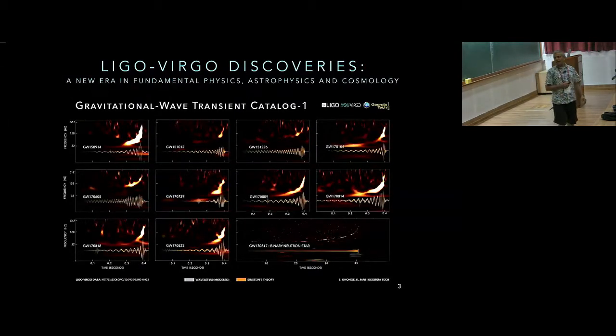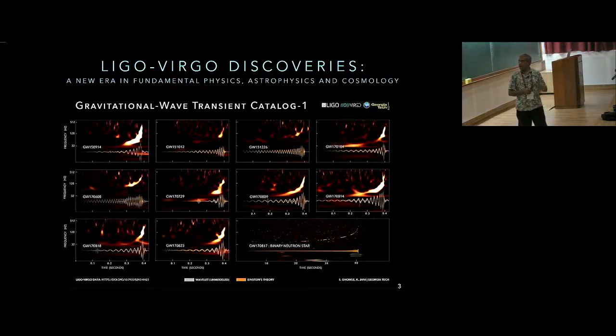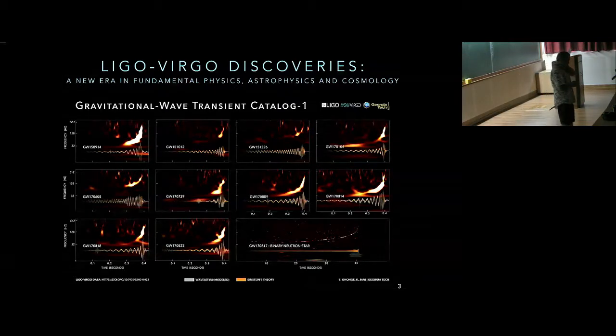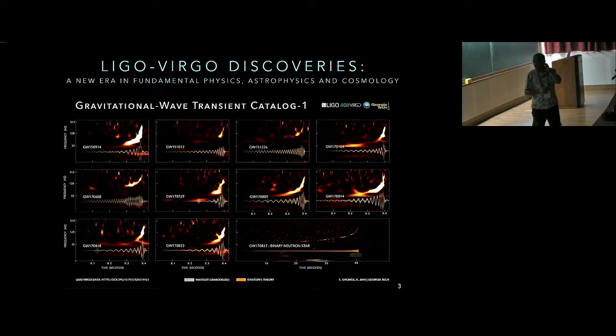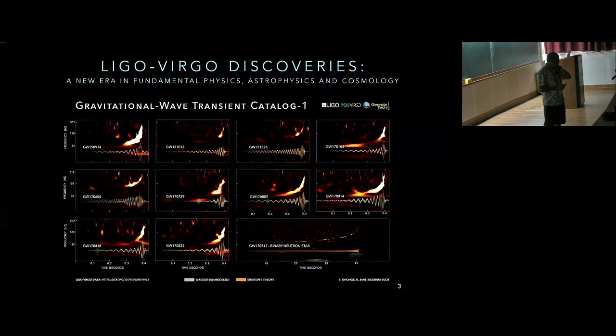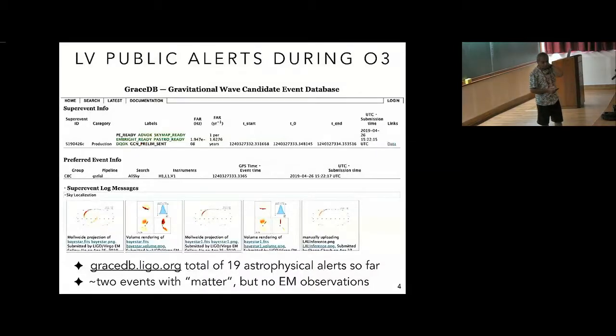LIGO and Virgo discoveries have really started a new era in fundamental physics, astrophysics, and cosmology, and today we're going to focus on just the astrophysical aspects. So this slide, which you already saw in Archana's talk, shows you the binary black holes, and the ten of them, and the lone binary neutron star detected during the first and second observing runs.